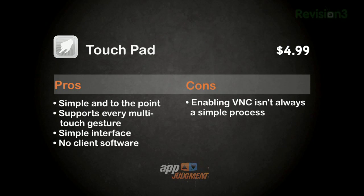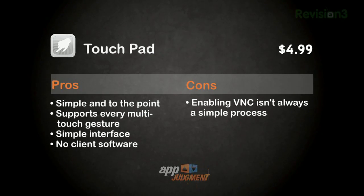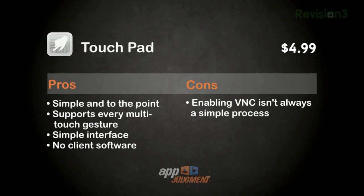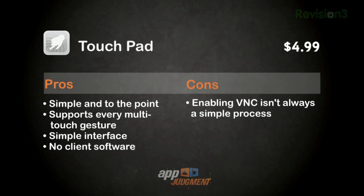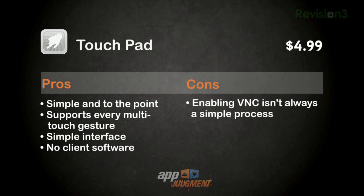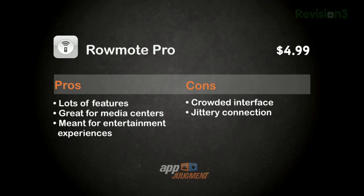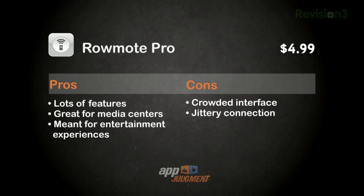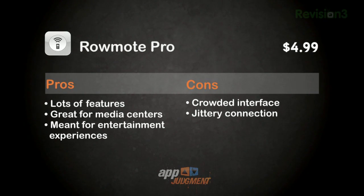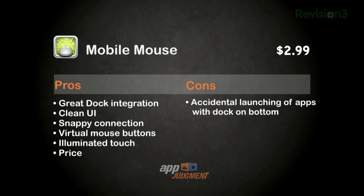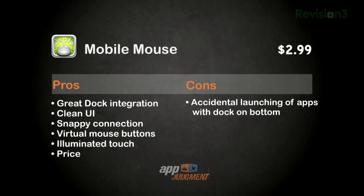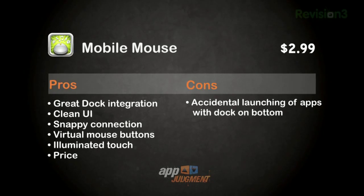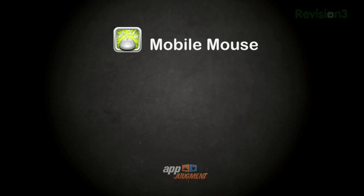Before I tell you who my pick is, let's break down my reasoning. Touchpad is a simple, unbloated trackpad that mimics all the functions of Apple's Magic Trackpad. A simple interface plus no need to install software makes it a good choice for minimalists — my only complaint is that enabling VNC in your settings takes a little more time and skill than simply launching an app. Remote Pro is feature-rich and the perfect companion to a media center, molded for a lean-back entertainment computing experience — my only complaint is the interface is a bit jumbled and the connection is a tad jittery. Mobile Mouse is a slick hybrid between the two with a phenomenal user interface — it's intuitive, it's clean, and it's the cheapest at $2.99, making it the just-right porridge of trackpads. Download this app.